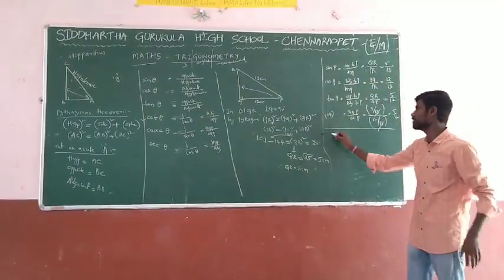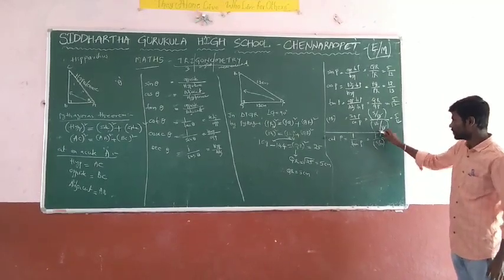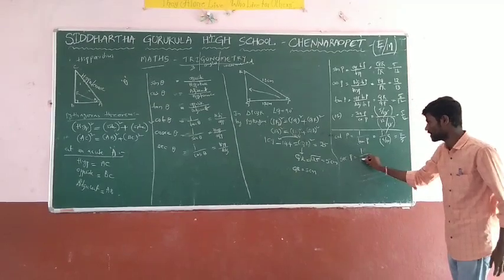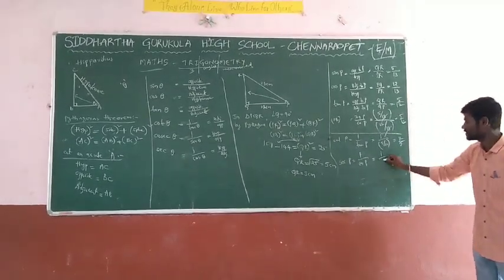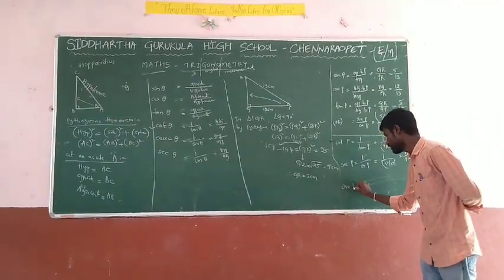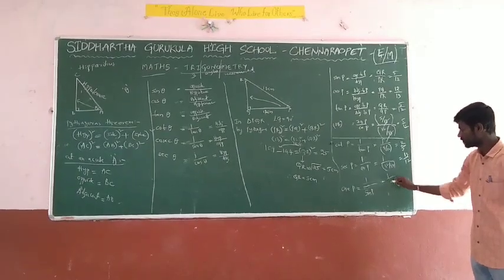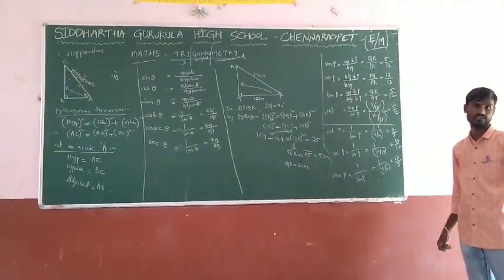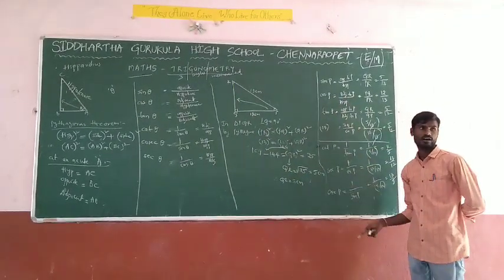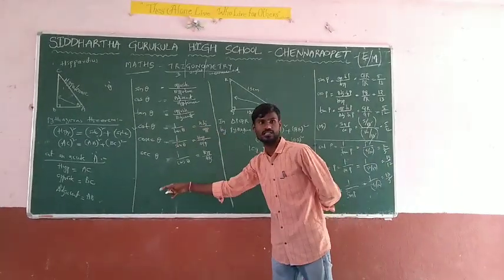Sec P is the reciprocal of cos P, that is 1 by cos P. Cos P is 12 by 13, so its reciprocal is 13 by 12. Cosec P is the reciprocal of sin P, that is 1 by sin P. Sin P is 5 by 13, so its reciprocal is 13 by 5. In this way, we can find all six trigonometric ratios. When given only two sides, we find the third side using Pythagoras theorem, then calculate the first three ratios using the formulas and the remaining three using reciprocals.